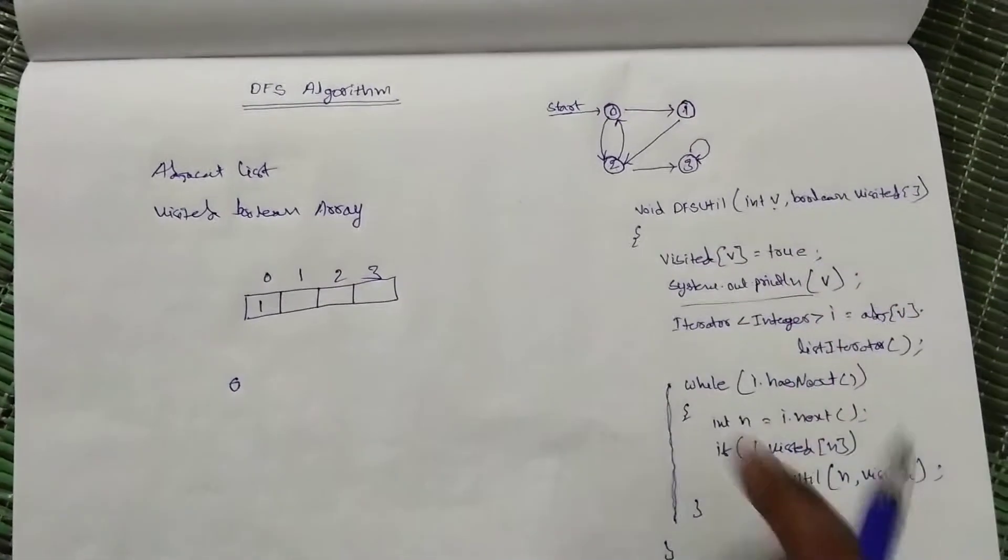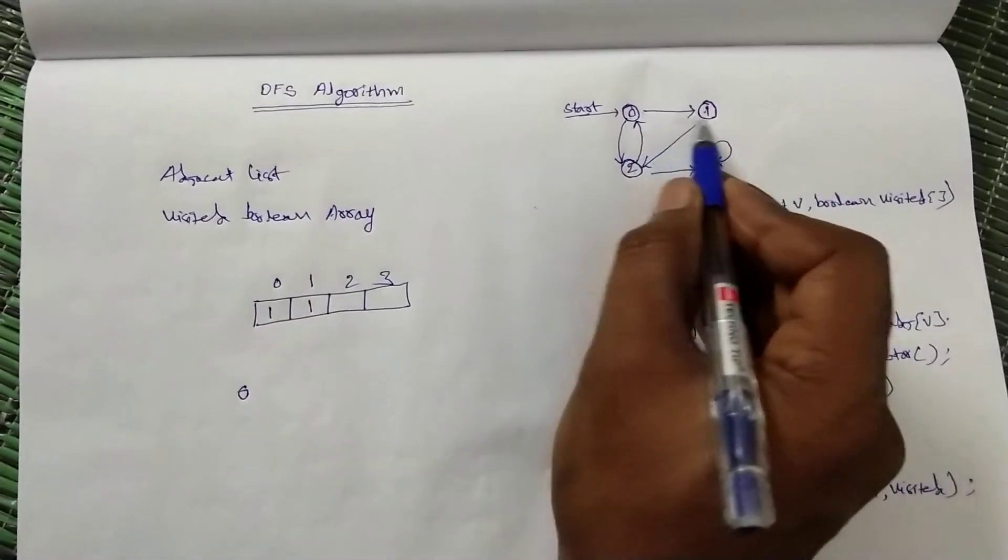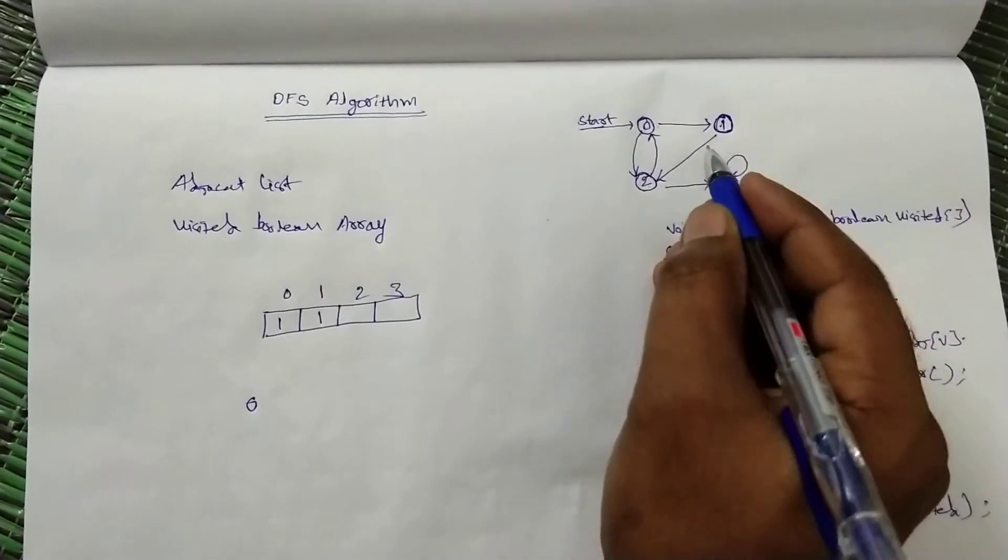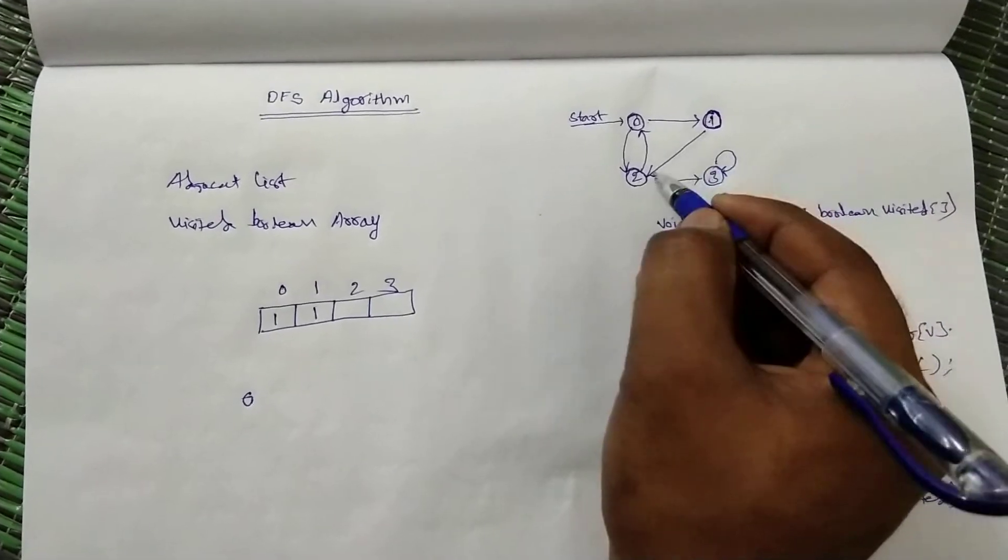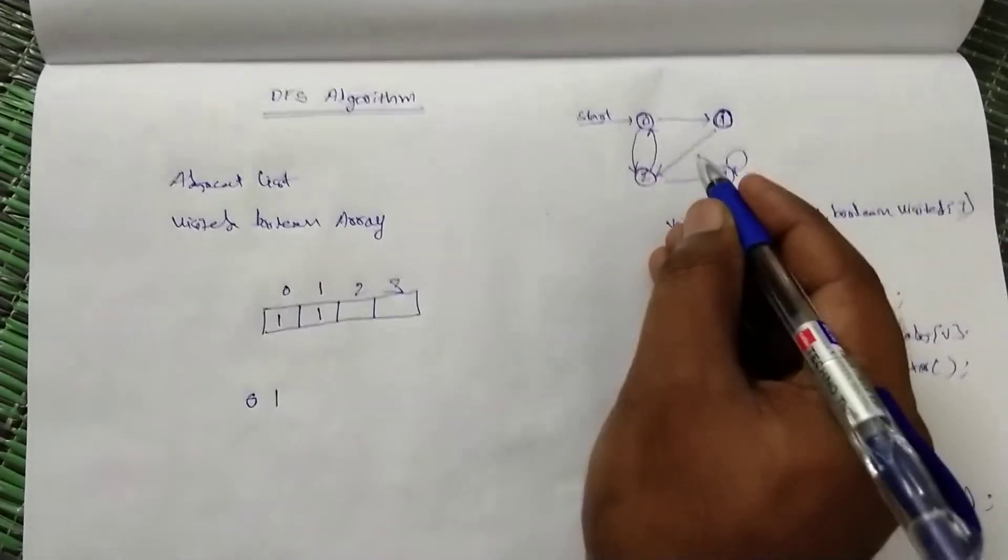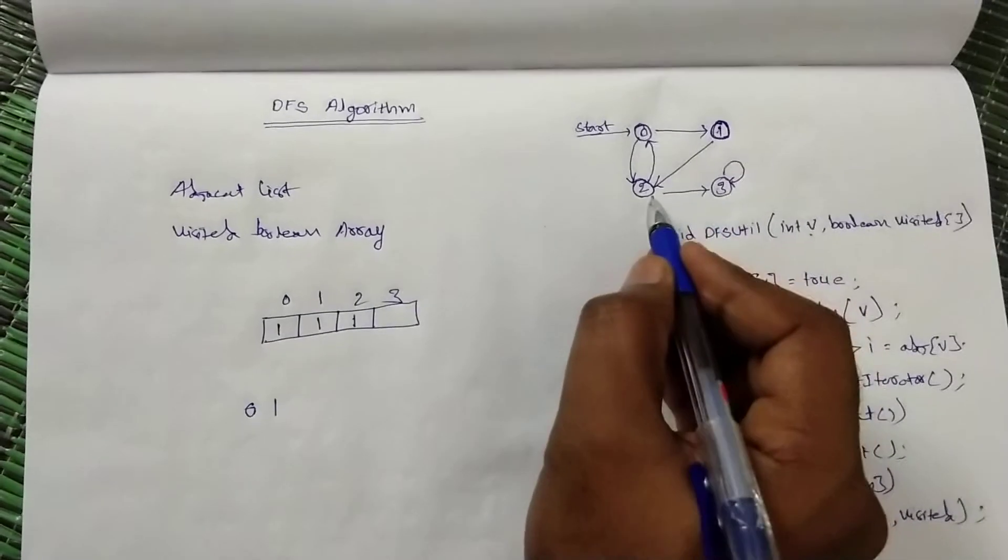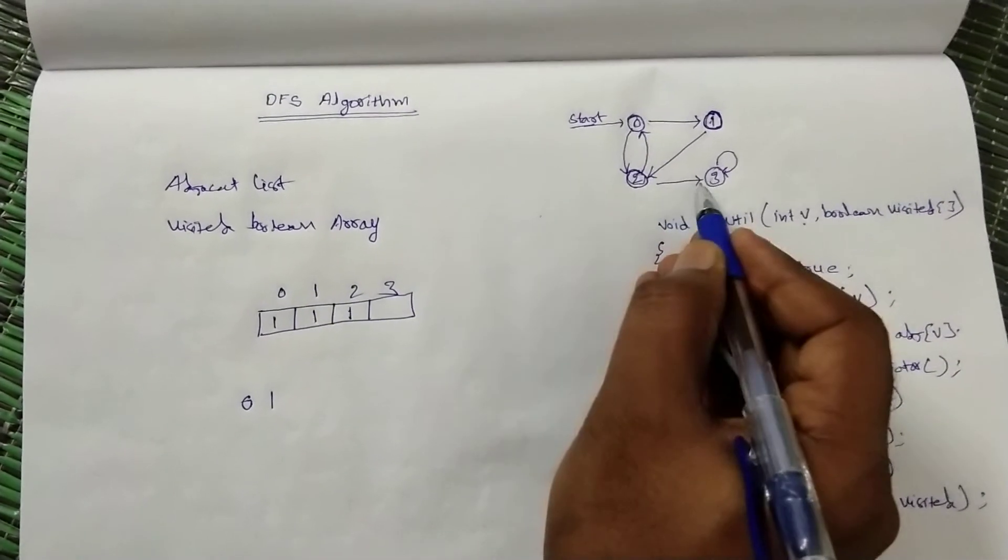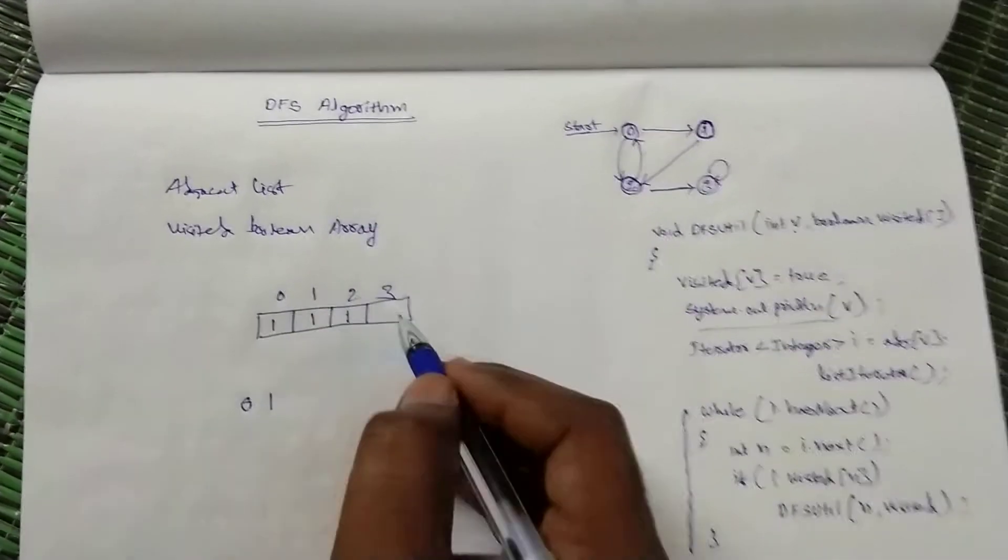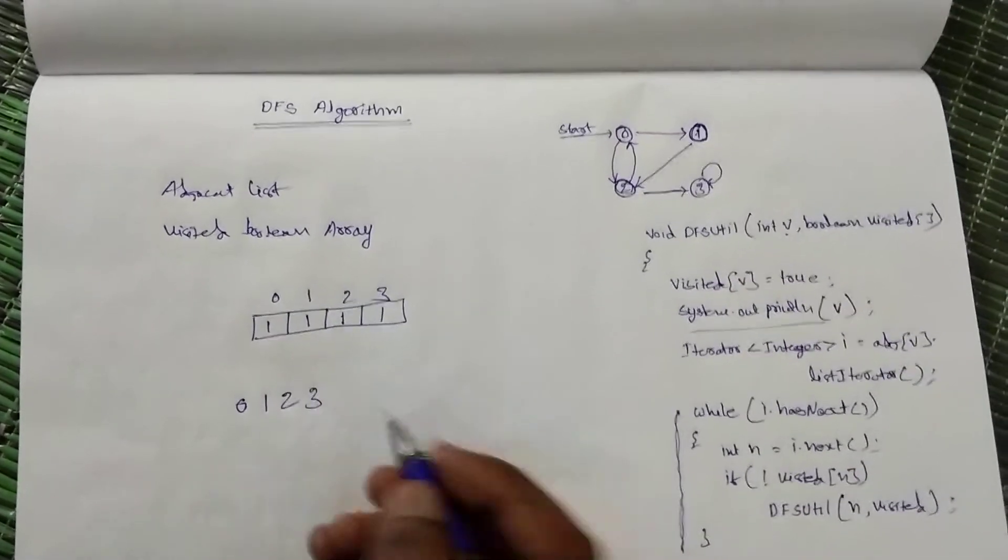Recursive algorithm - then again one will mark as visited, then it will explore its adjacent nodes, that is only 2. Then one is printed here. After that, adjacent nodes of 1 is 2, that is visited. Adjacent nodes of 2 are 3 and 0.